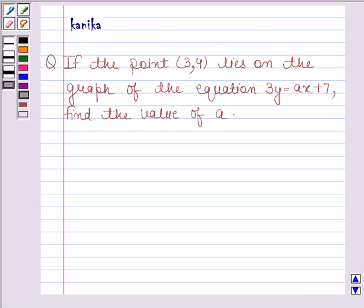Hi and welcome to the session. Let's discuss the following question. The question says, if the point (3,4) lies on the graph of the equation 3y = ax + 7, find the value of a.